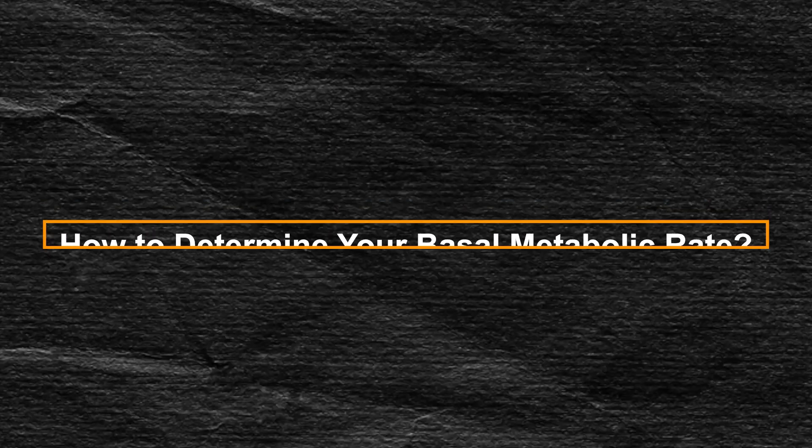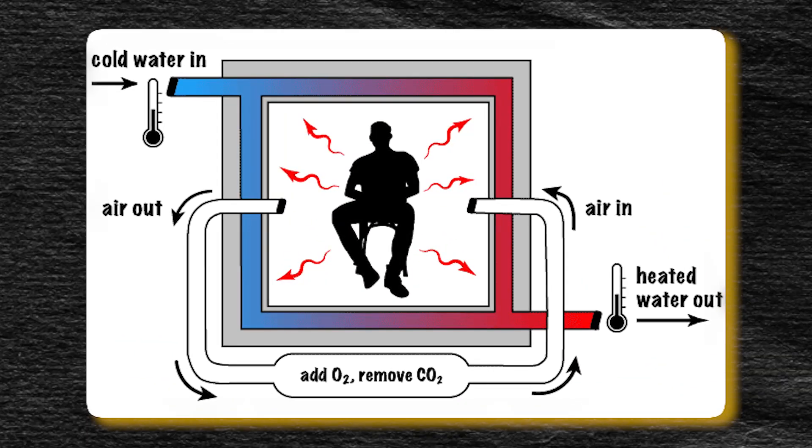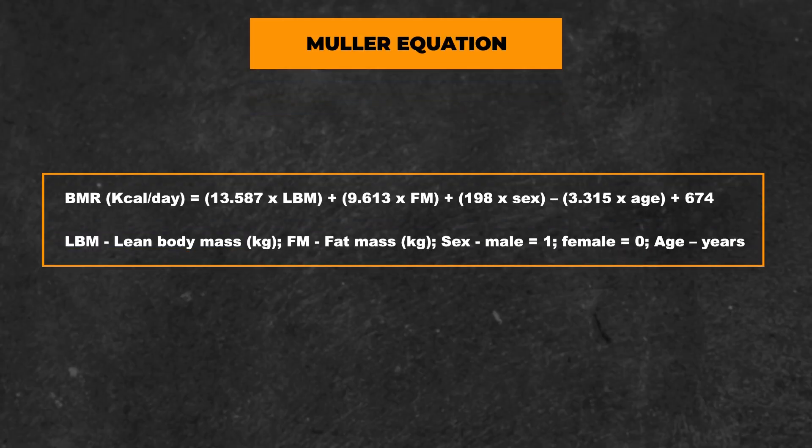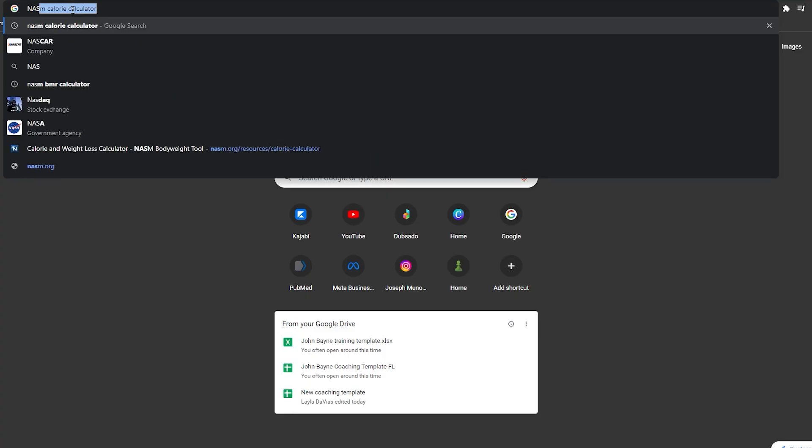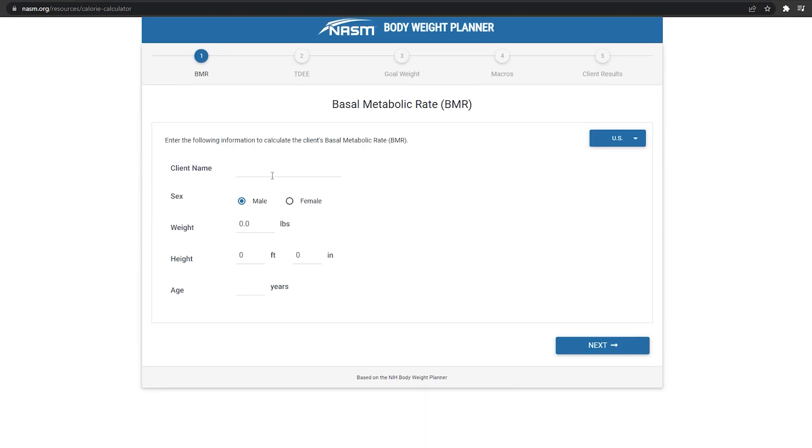So how do you determine your basal metabolic rate? The only way to measure BMR directly is using a method called direct calorimetry, which measures how much energy or heat your body releases over a period of time. Since most people don't have access to this equipment, equations using anthropometric variables such as your age, weight, and height have been developed to estimate your BMR. My favorite is the Mueller equation. There are great BMR estimators online — I'll link one by NASM in the description. You can simply plug in all the variables and it will tell you your BMR.